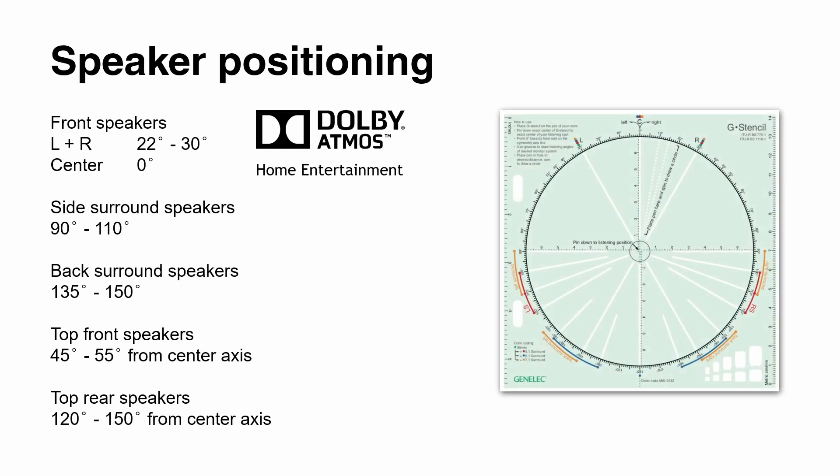When it comes to speaker positioning, it's actually not that difficult. Dolby Atmos follows the ITU recommendations for speaker placement on a circle around the listener. Front speakers are mounted the same as in stereo, between 22 and 30 degrees from your center angle. The center speaker is placed right in the middle in front of you. For the side surrounds, there is a window between 90 and 110 degrees where you can mount them — useful if a door or window is at that exact position, so you can shift speakers slightly forward or rearward, or even lift them a little.